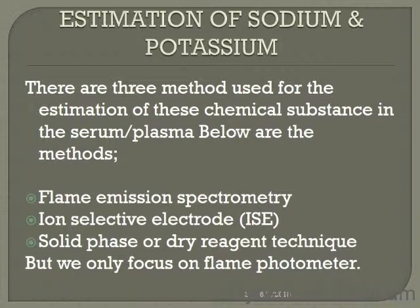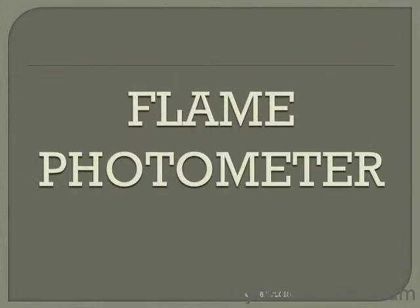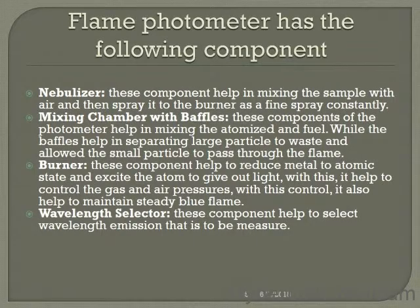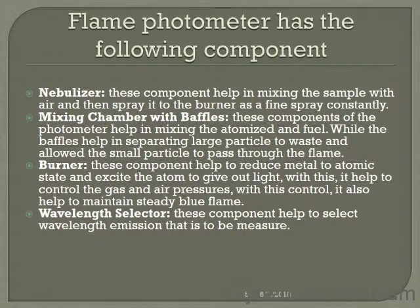We are only going to focus on flame photometry. Flame photometry has the following components. It has a nebulizer — a component that helps in mixing the sample with air and then sprays it to the burner as a fine spray constantly. It has a mixing chamber with a buffer, which helps in mixing the atomized fuel while the buffer helps in separating large particles to waste and allows small particles to pass through the flame. There is a burner, which helps to reduce metal to atomic state and excite the atom to give out light, controlling gas and air pressure to maintain a steady blue flame.